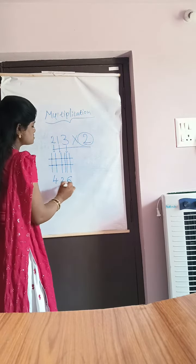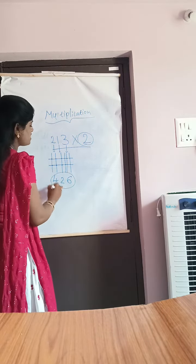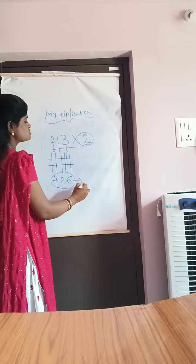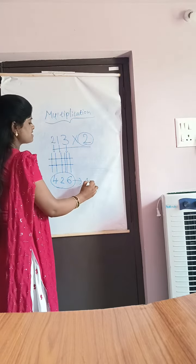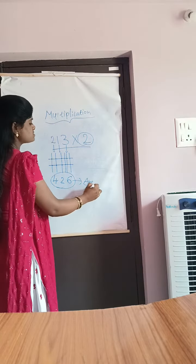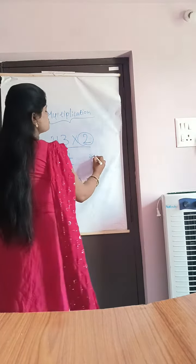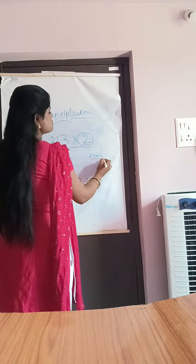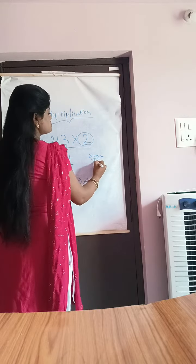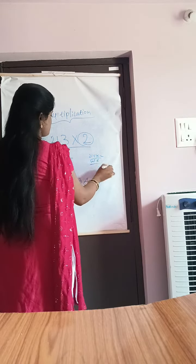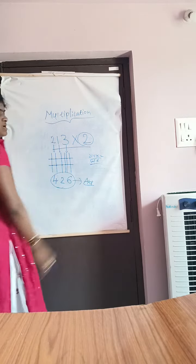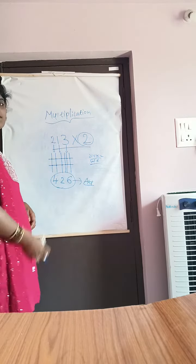So 4, 2, 6 — 426 is your final answer. In another method also you can check. Simple way: 2, 3 is 6; 2, 1 is 2; 2, 2 is 4. So 426 is your answer.